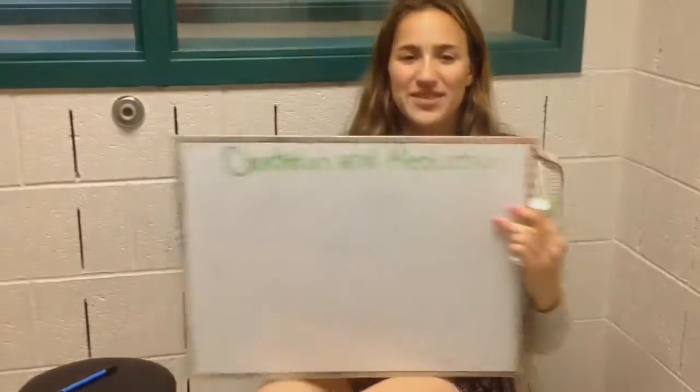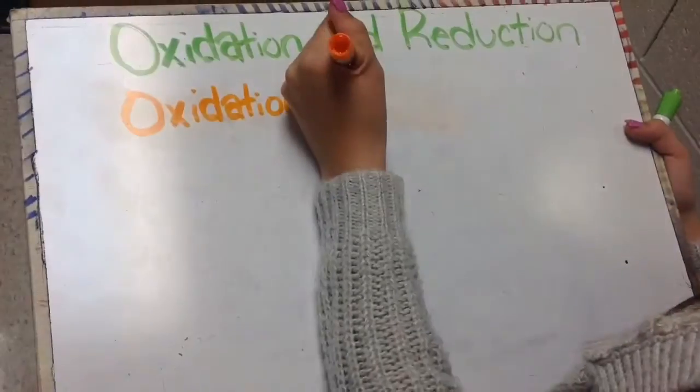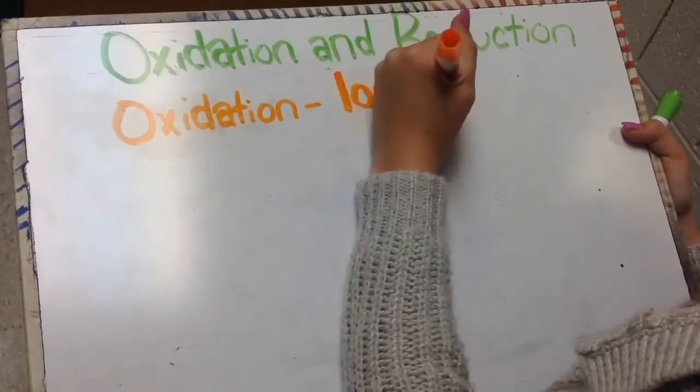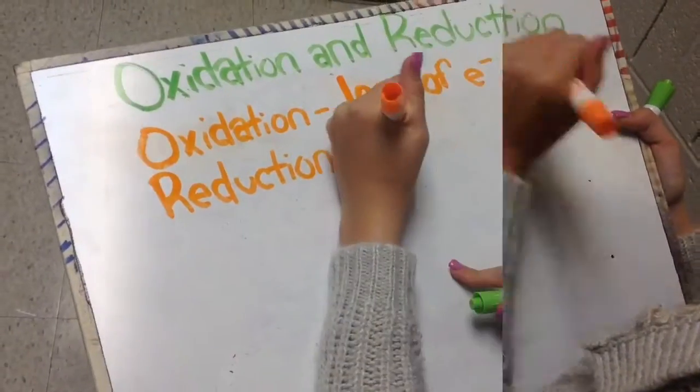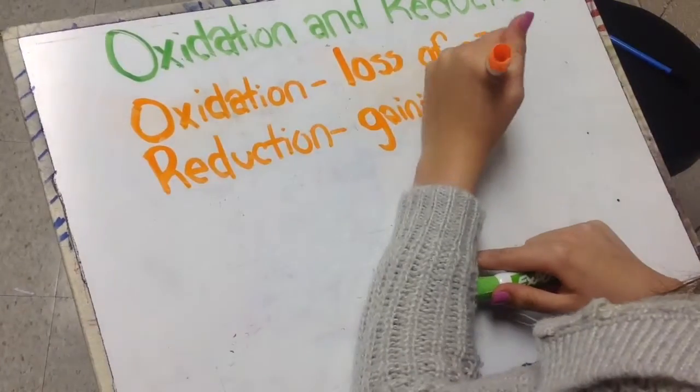Hi guys, I'm Katie, and I'm here to talk with you all about oxidation and reduction. First is oxidation. Oxidation is the loss of electrons. Reduction is the opposite. It's the gaining of electrons.